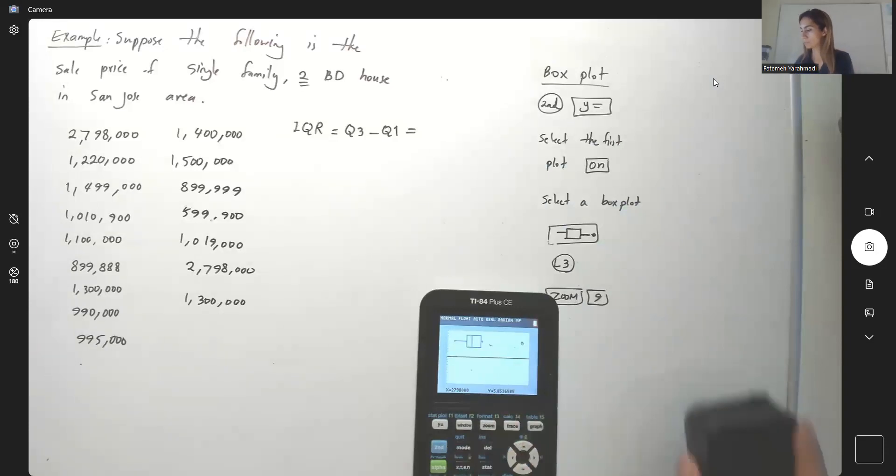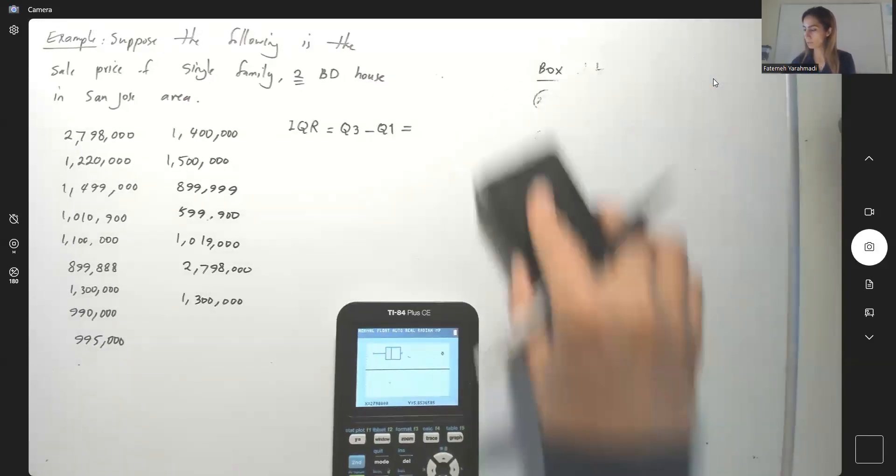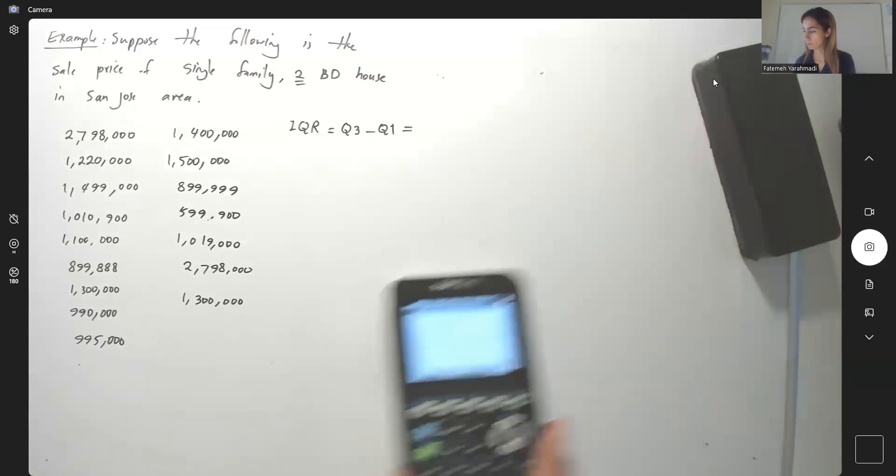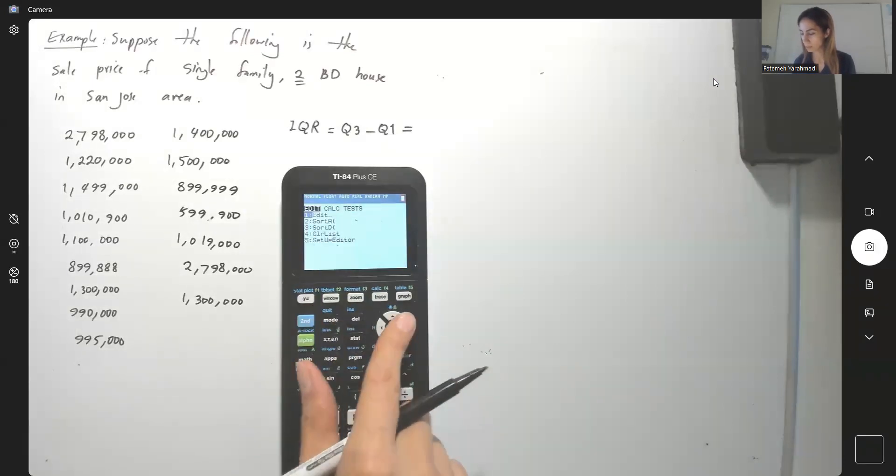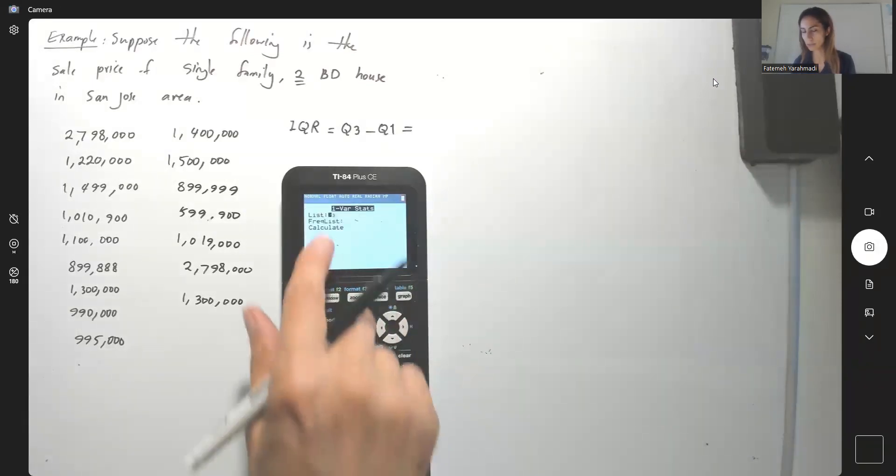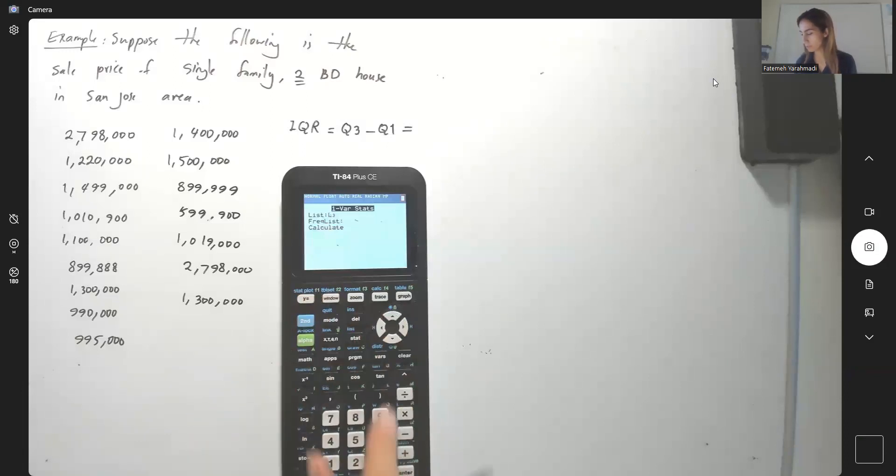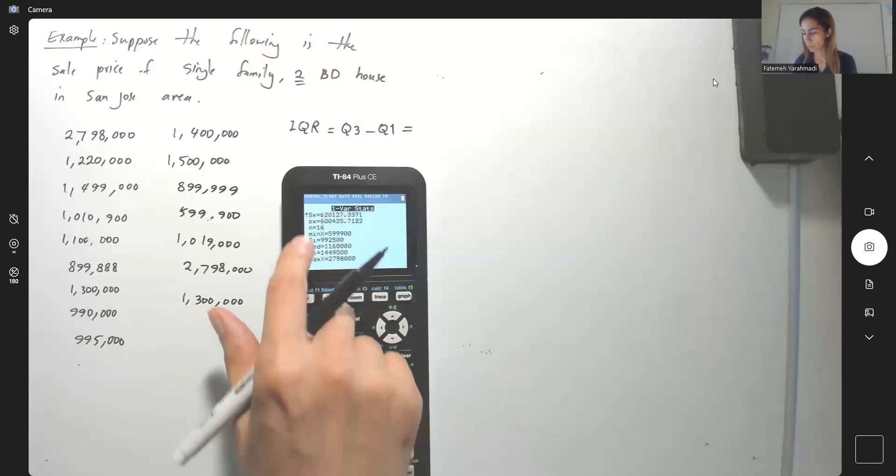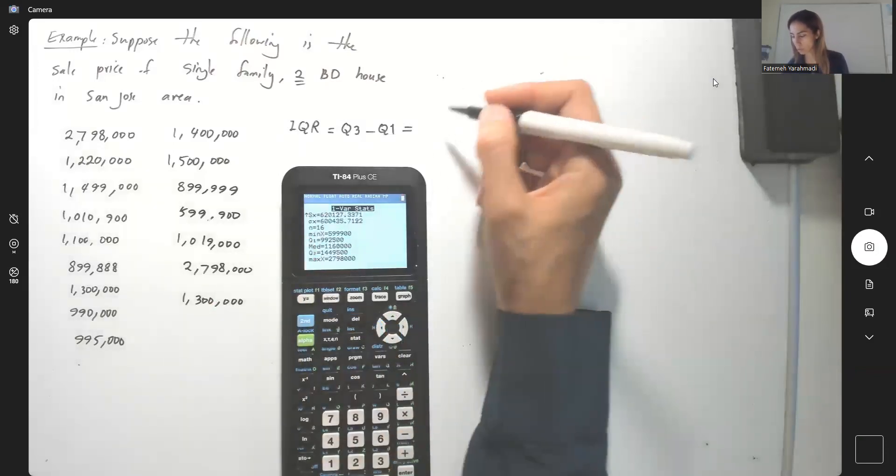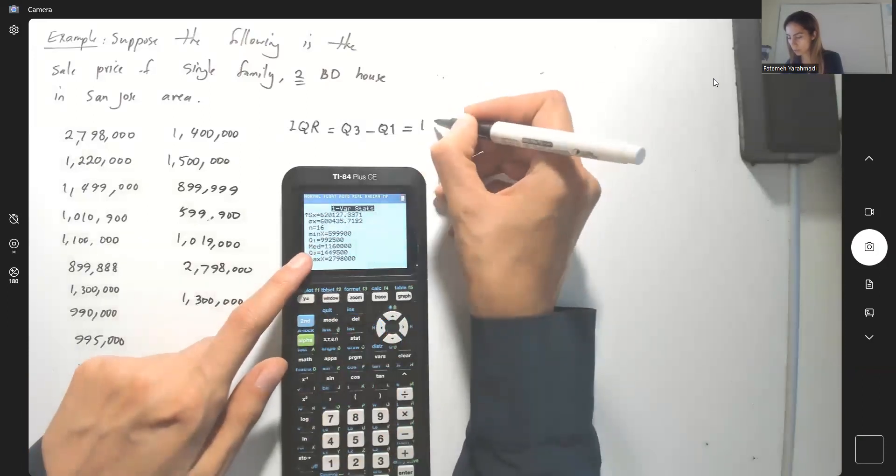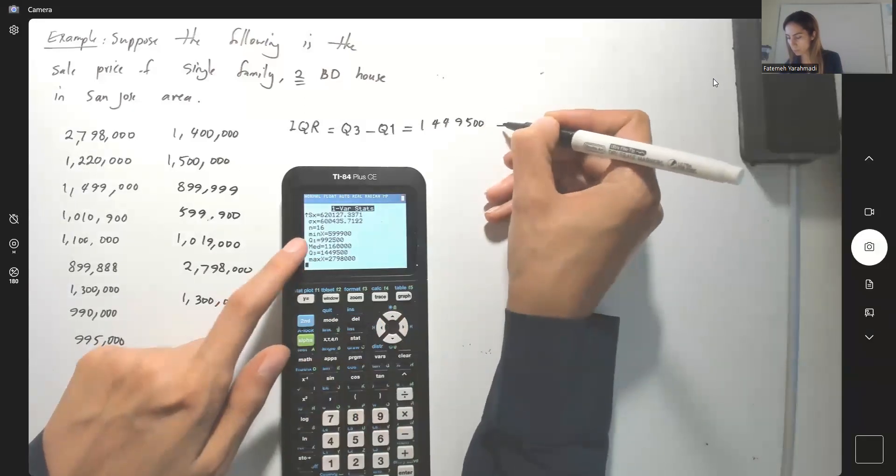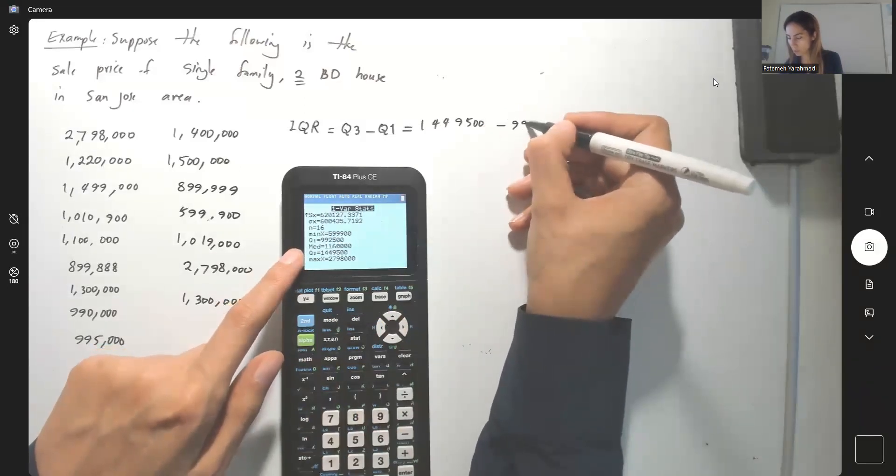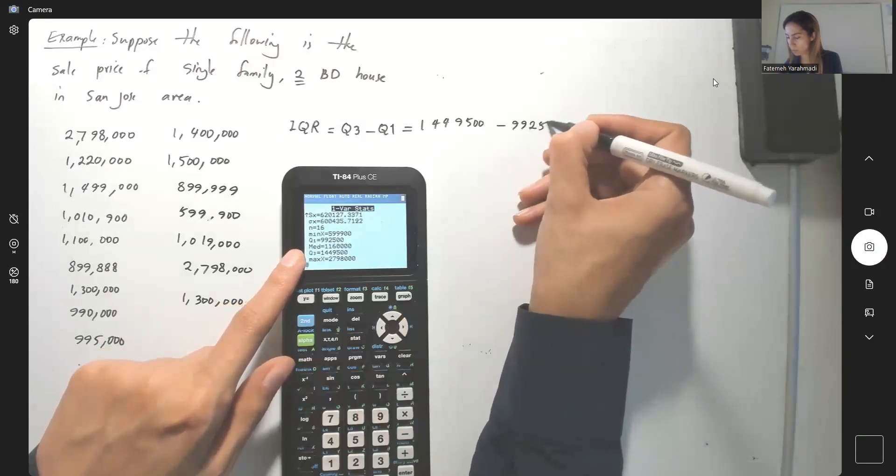Let me erase this part of the board for the box plot. The information that we found, you can go back to stat and calc one variable statistic. Everything is written in L3. So here you do the calculation - you have information about your third quartile and the first quartile. Your third quartile is 1,449,500 and minus the first quartile 999,925.